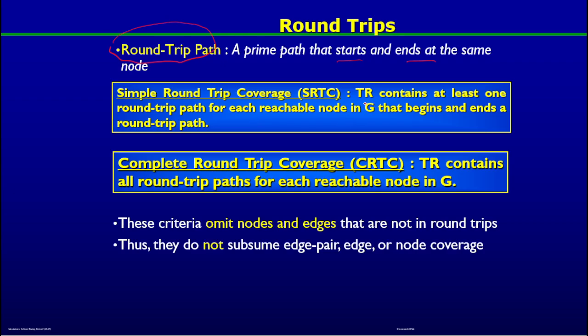Simple round trip coverage requires that the test requirement contains at least one round trip path for each reachable node in the graph that begins and ends a round trip path. For any reachable node with one or more round trip paths, at least one must be covered. For complete round trip coverage, all round trip paths for each reachable node in the graph must be covered.